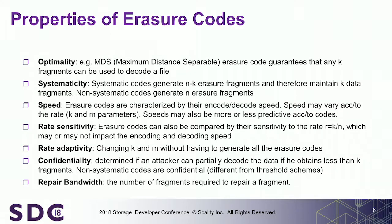A summary of properties of interest. Optimality: the very important property called MDS — Maximum Distance Separability — which guarantees that with any K fragments, you can decode. There are some other types of codes which are not MDS but have interesting properties. Systematicity: as we just saw, systematic or non-systematic — whether you maintain K data fragments in plain text, or code all of them.